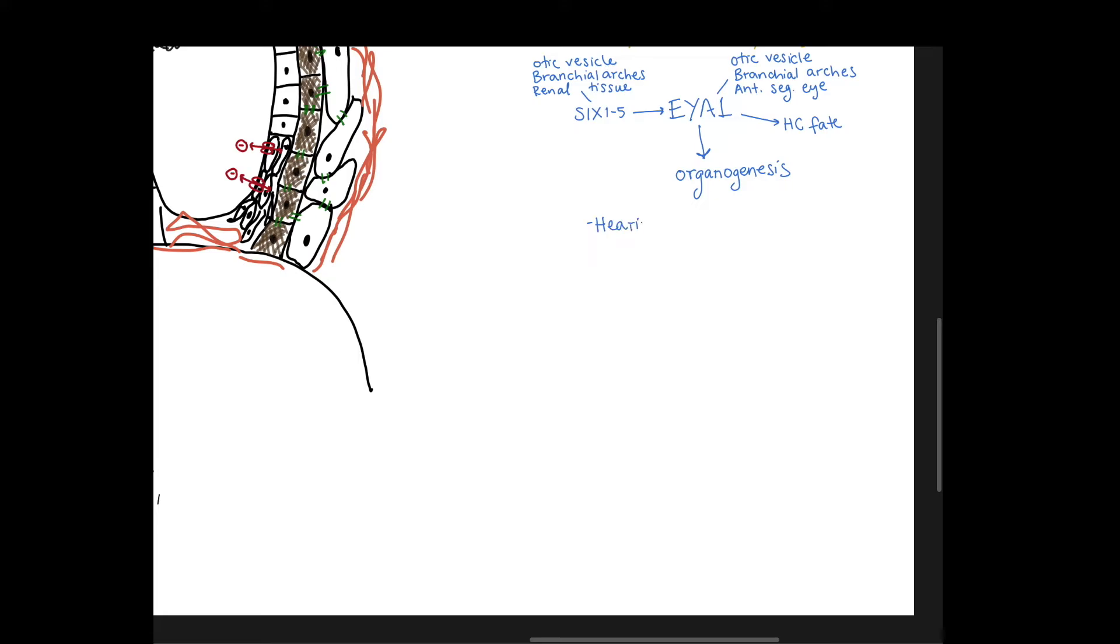These patients will have hearing loss because the hair cells and otic vesicle is disrupted. They can have external and middle ear anomalies on account of the branchial arches 1 and 2 being affected. They can have inner ear malformations because the otic vesicle is affected, and usually these are hypoplasias, so hypoplasia of the cochlea and of the lateral semicircular canal, as well as enlarged vestibular and cochlear aqueducts.